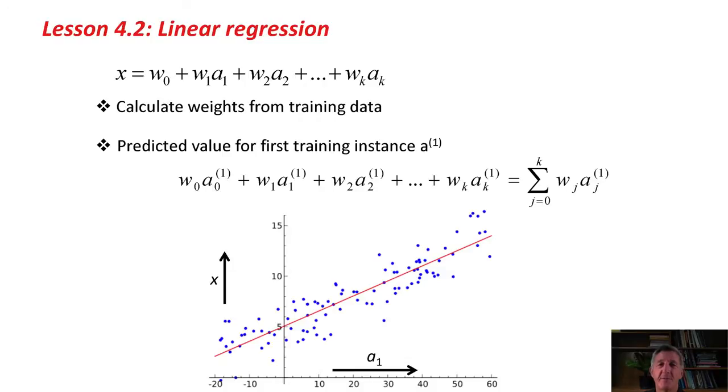We're going to calculate these weights from the training data: w0, w1, and w2. Once we've calculated the weights, we're going to predict the value for the first training instance, a1. The notation gets really horrendous here. I know it looks pretty scary, but it's pretty simple. We're just using this linear sum with these weights that we've calculated, using the attribute values of the first test instance, in order to get the predicted value.